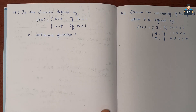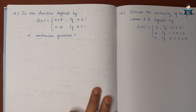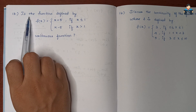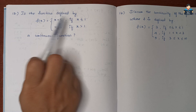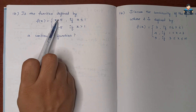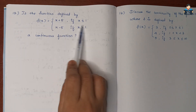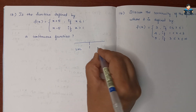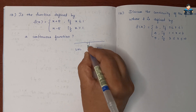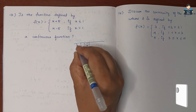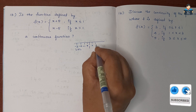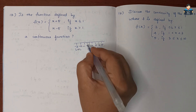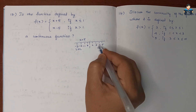Hello everyone, welcome to our channel. In this video, Class 12 NCERT Math Chapter 5 Continuity and Differentiability, Exercise 5.1, Question Number 13. The function is defined by f(x) = x + 5 for x less than or equal to 1, and f(x) = x - 5 for x greater than 1. Here we examine the left-hand limit (LHL) and right-hand limit (RHL).